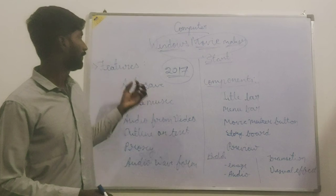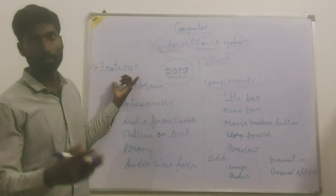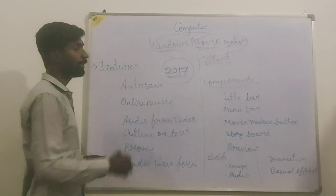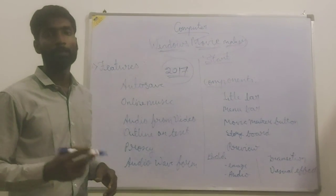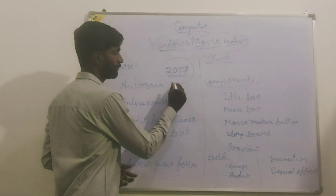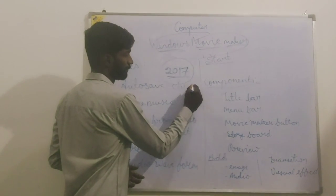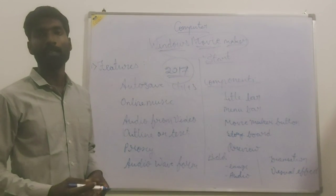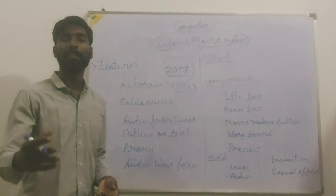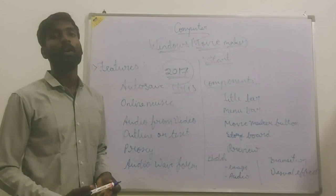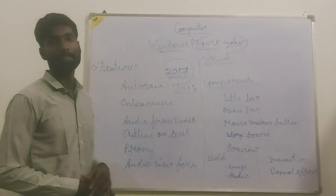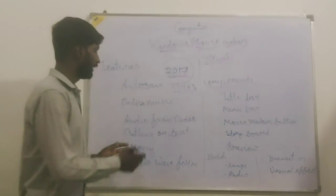Now let's see the features. The first feature in the second chapter is Auto Save. Whenever we work with PowerPoint or MS Word, we have to press Control+S to save. But in Windows Movie Maker, you do not need to press anything — whatever editing or modification you are doing, it will automatically save.